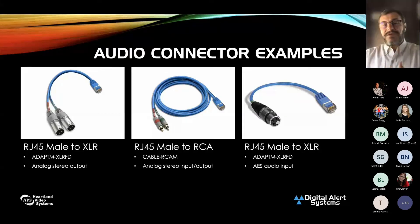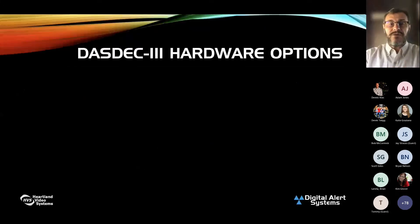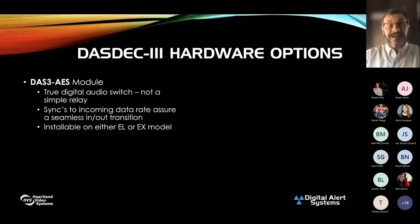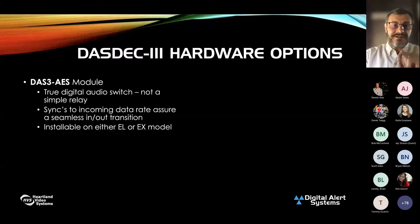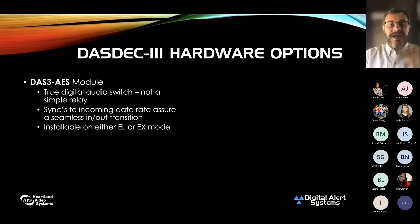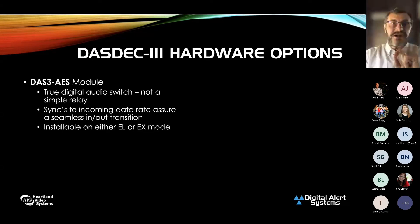For hardware options on the DASDEC 3, the AES module 2 is an important distinction — it is a true digital switch, not just relays. It syncs to the incoming data rate, so whether coming in at 48 kHz or 44.1, it matches that on the outgoing side. You get a good transition with no pops. This AES module is installable on either the EL or EX — something we couldn't do as a configuration option before.